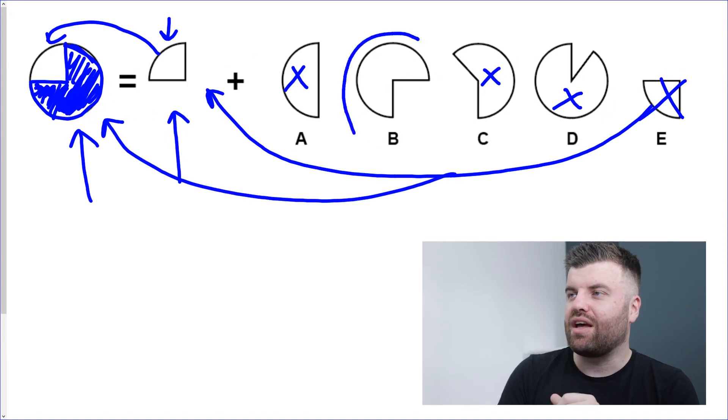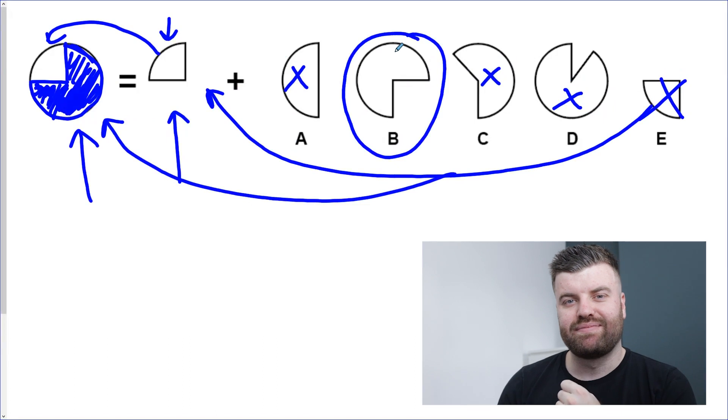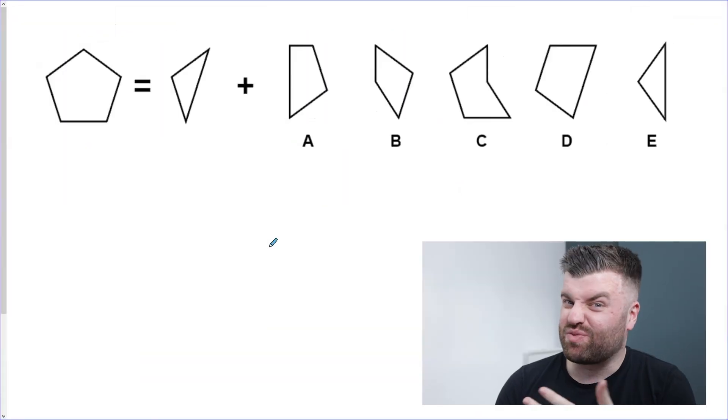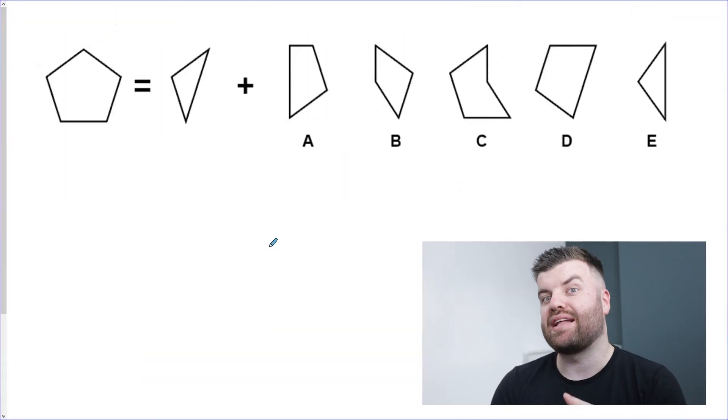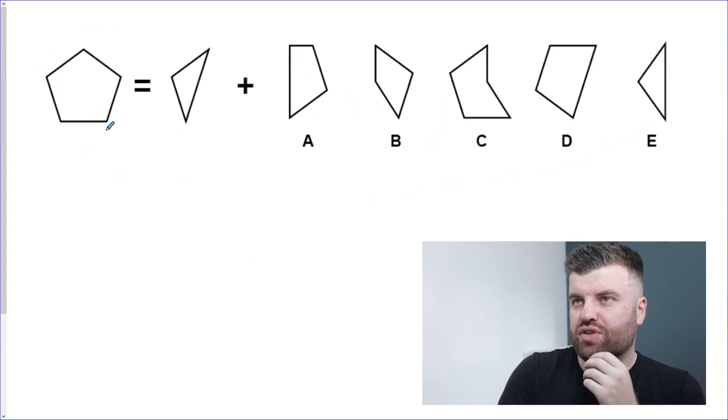Now that first question was relatively easy, so let's try and up the ante a bit. I'm going to get harder as we go through. Here's question two. We're given a pentagon, this five-sided shape, and this chunk has been taken out.